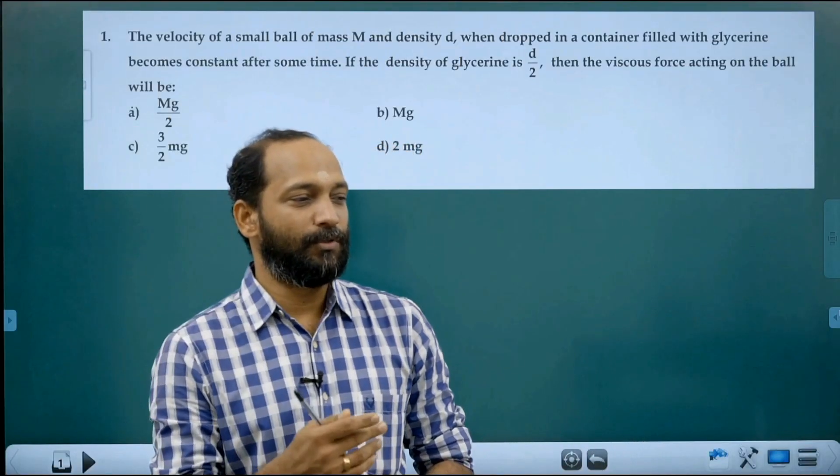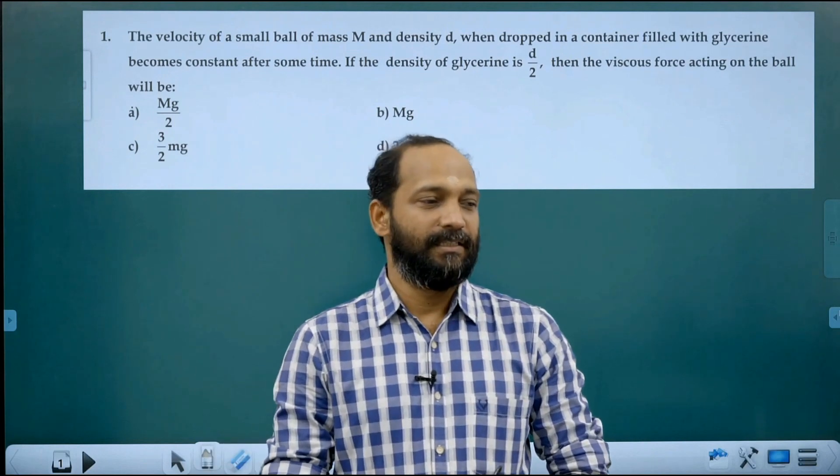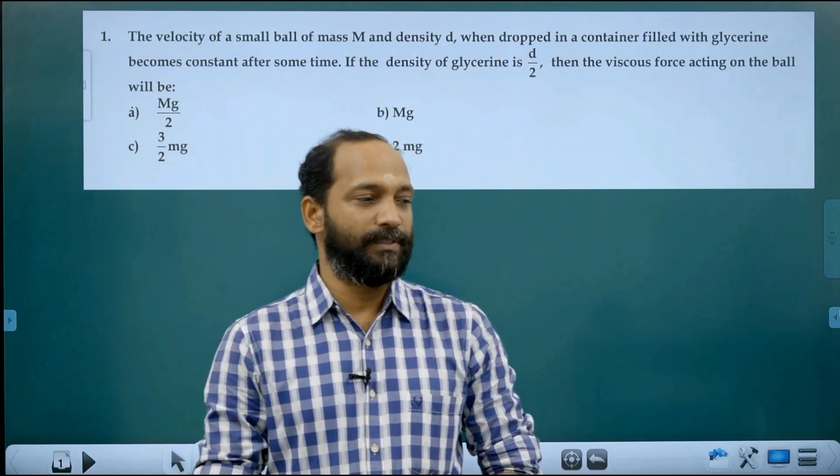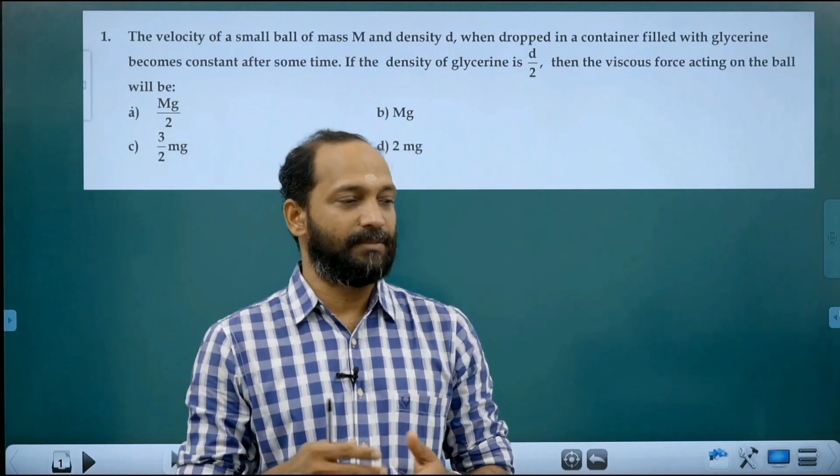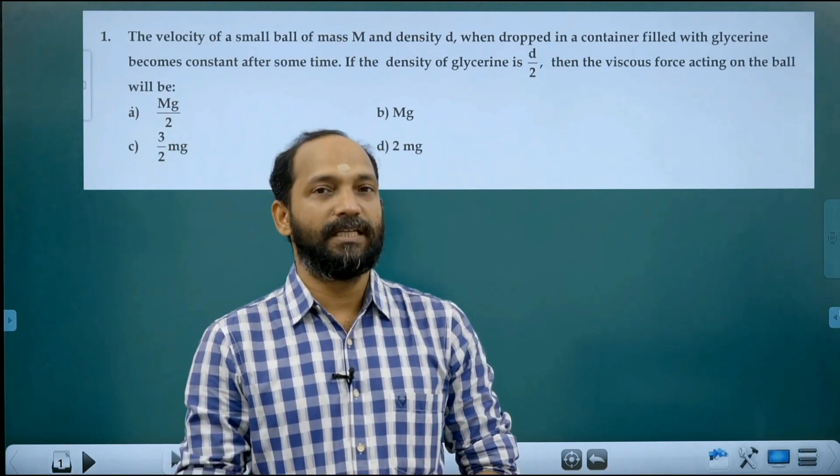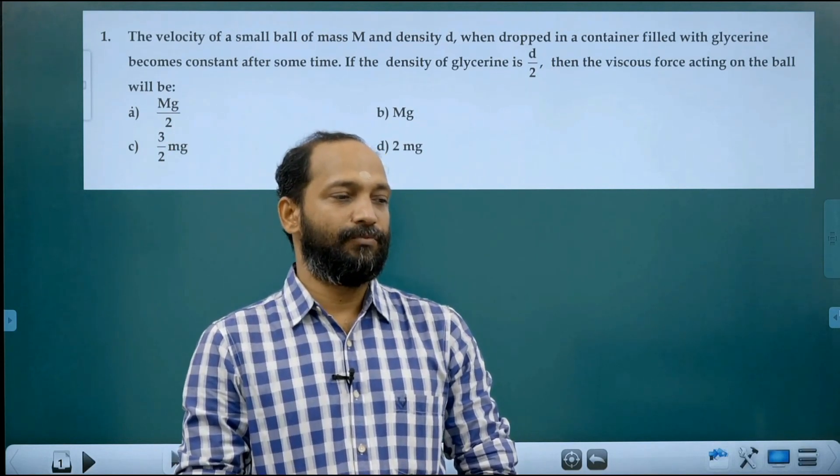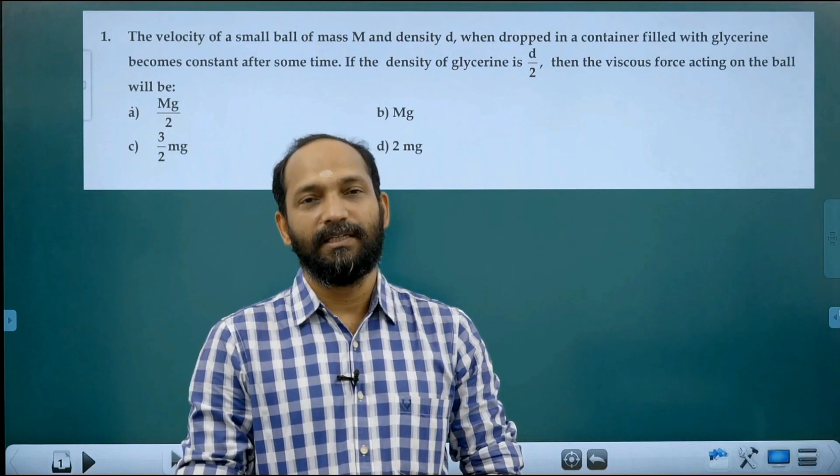The velocity of a small ball of mass m and density d when dropped in a container filled with glycerin becomes constant after some time. Density of glycerin is d by 2, then viscous force acting on the ball will be.